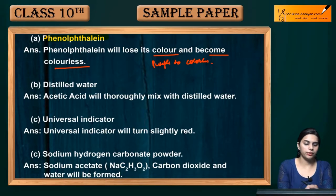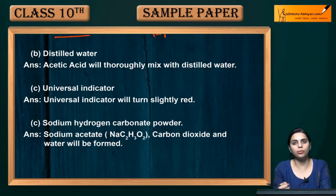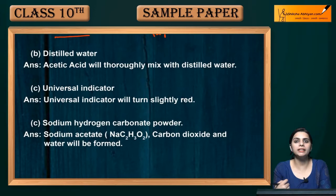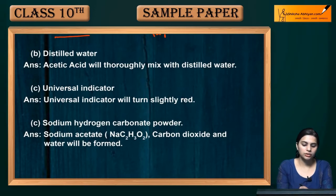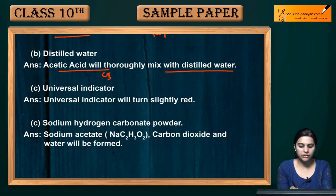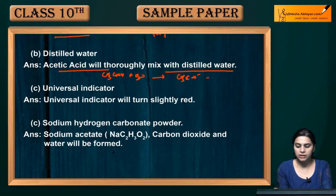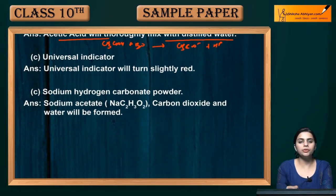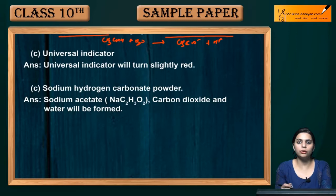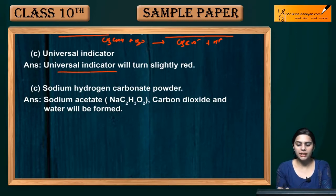Next, when you add distilled water to your acetic acid, what will happen? The acetic acid will dissolve in the water and dissociate into ions. The reaction is: CH₃COOH + H₂O → CH₃COO⁻ + H⁺. The water will turn slightly red (litmus indicator).